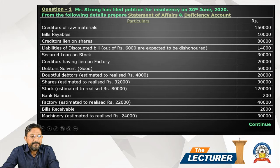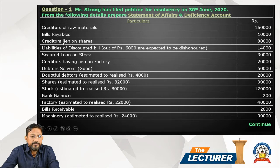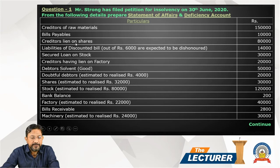Particulars regarding creditors: creditors for raw material are normal or unsecured creditors. Bills payable 10,000 — unsecured creditor. Creditors with lien on assets — this means secured creditors. We will check whether it is fully secured or partly secured. Unsecured creditors go to List A, fully secured to List B, and partly secured to List C.